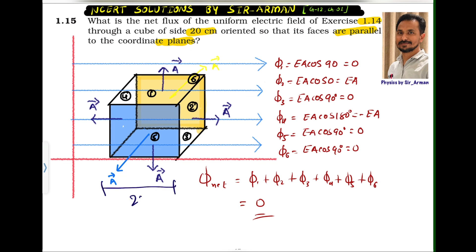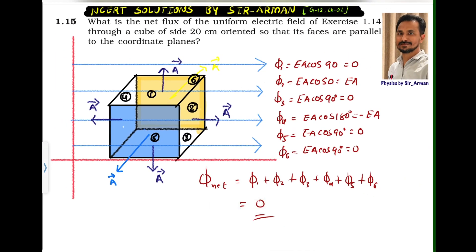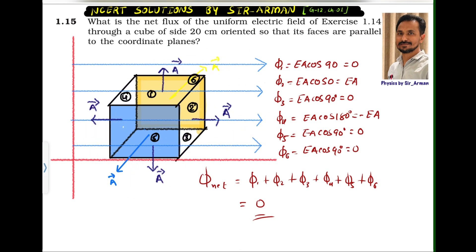We have a cube whose one side is 20 centimeter long, and it is placed in a uniform electric field. I have labeled some surfaces: the uppermost surface is labeled as one. The next surface is number two, the bottom surface is number three, the surface which touches the field first is number four, the surface facing our side is five, and the surface on the other side is six.